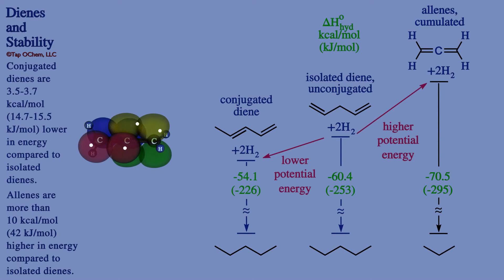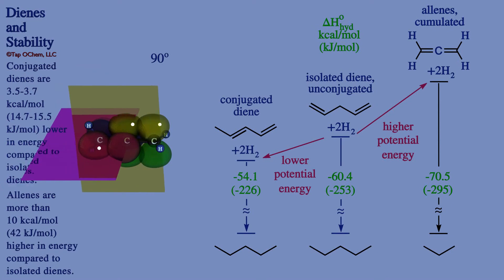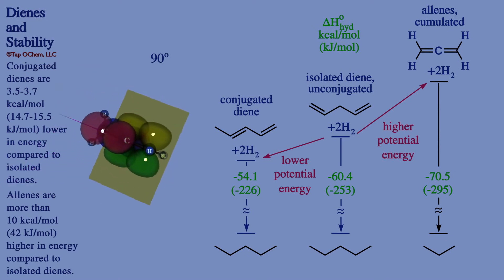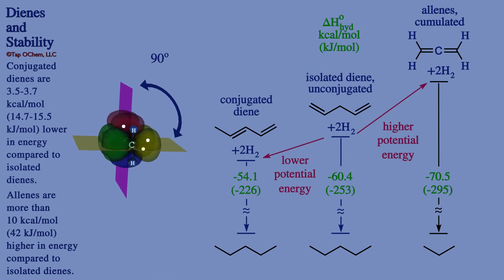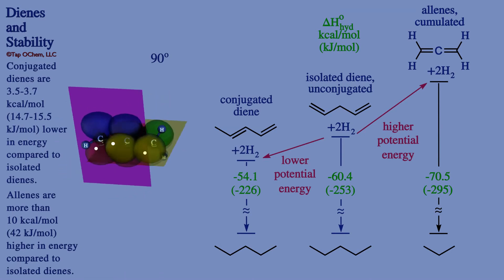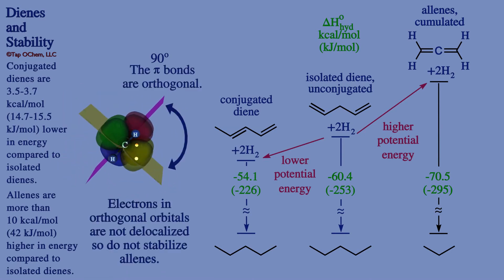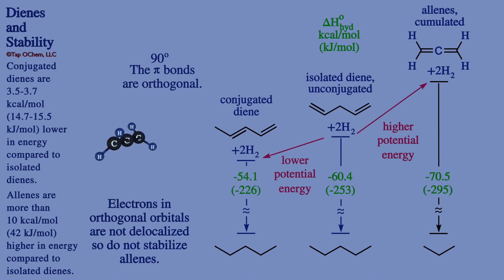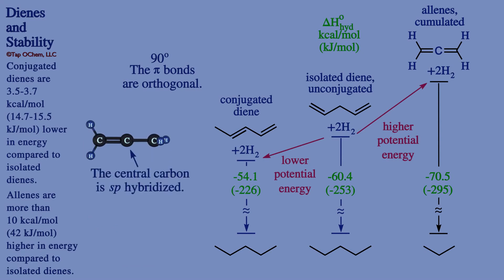Let's now show the p orbitals that comprise the two double bonds of allene. The two pi bonds in allenes are at 90-degree bond angles. We will place two planes bisecting each pi bond's p orbitals and rotate our allene to visualize this. Even though the pi bonds share the central carbon, the p orbitals on that carbon do not overlap because they are at 90-degree bond angles from one another. When we have this arrangement of orbitals without overlap, they are said to be orthogonal. Electrons that lie in orthogonal orbitals are not delocalized, so they cannot stabilize allenes. In addition, sp hybridization of this central carbon contributes to the increase in energy of cumulative dienes.